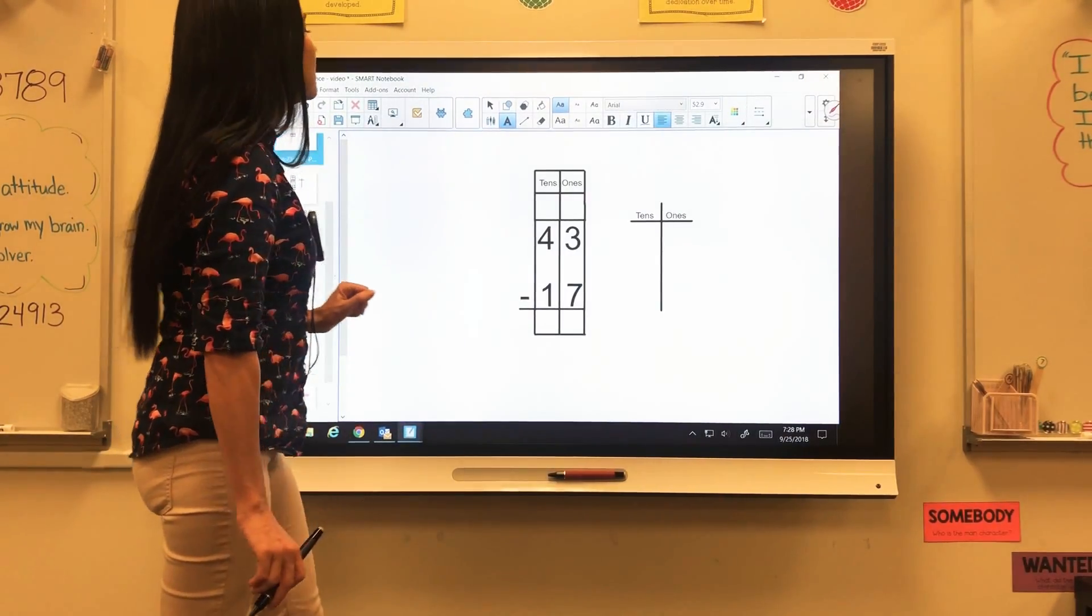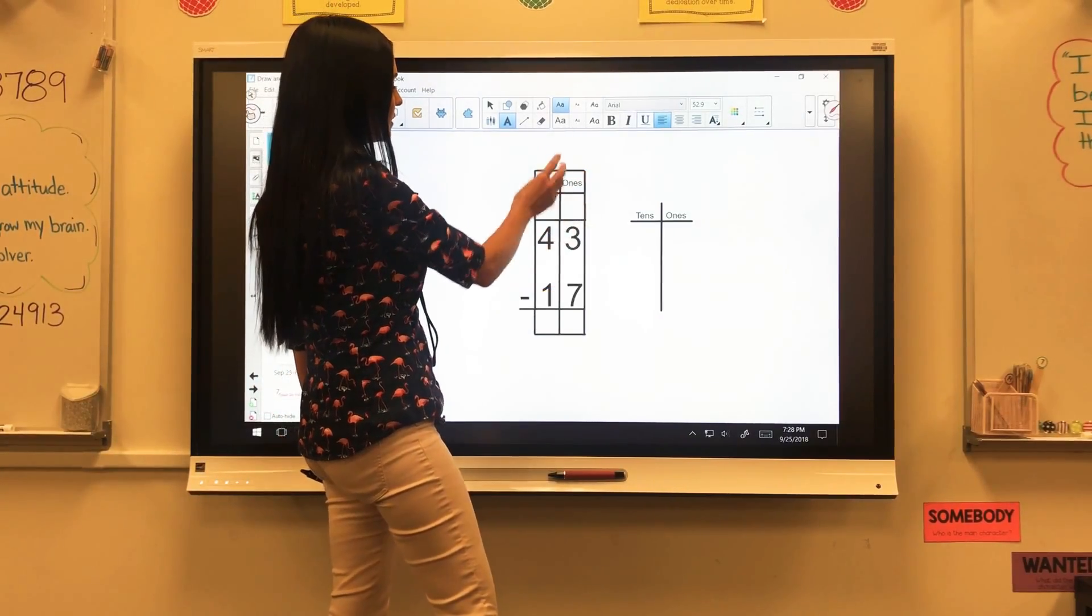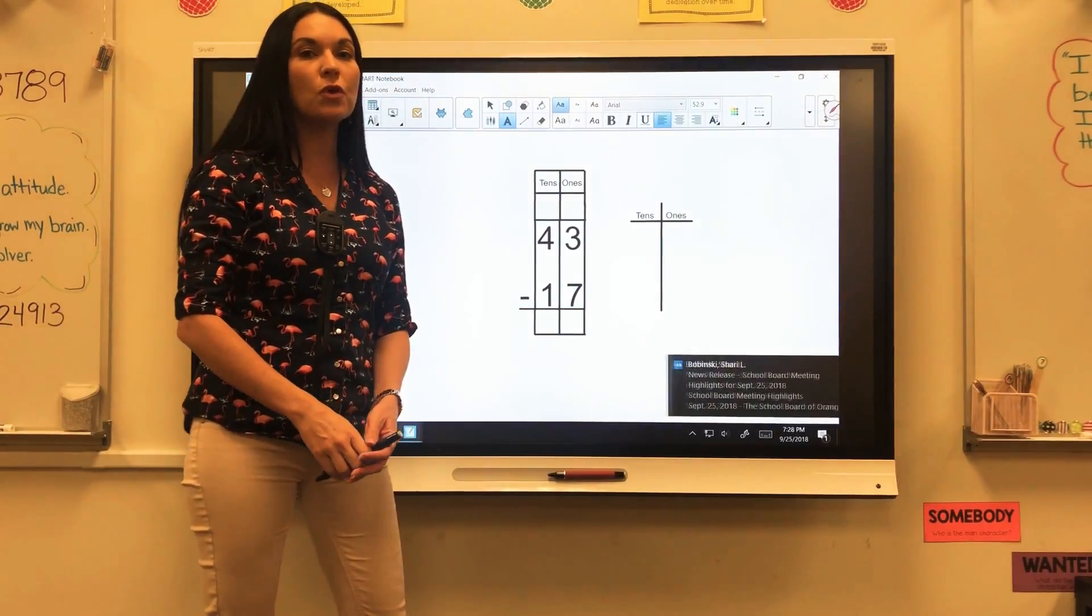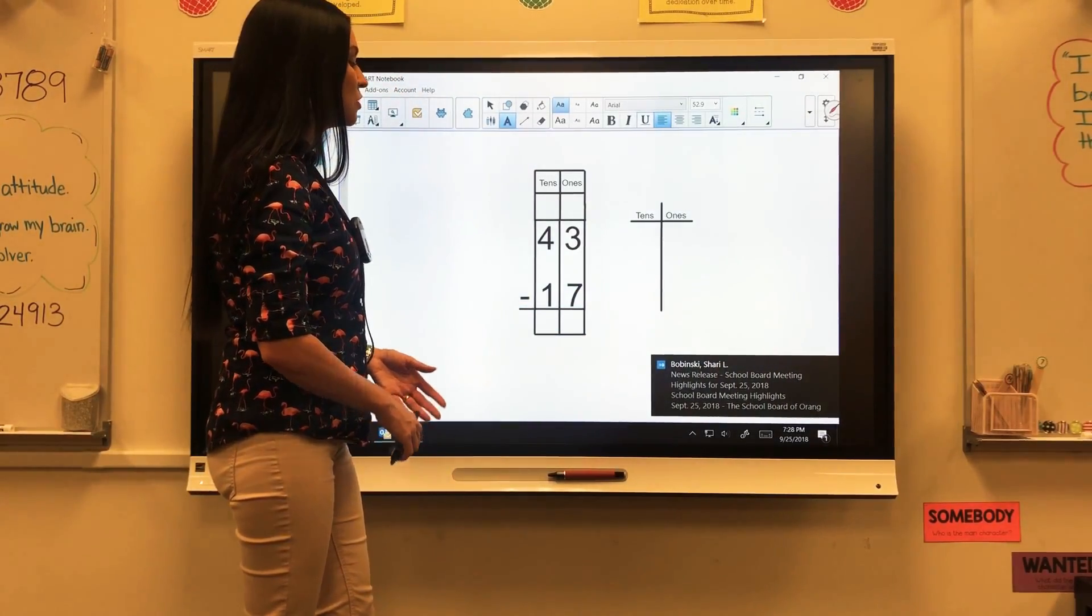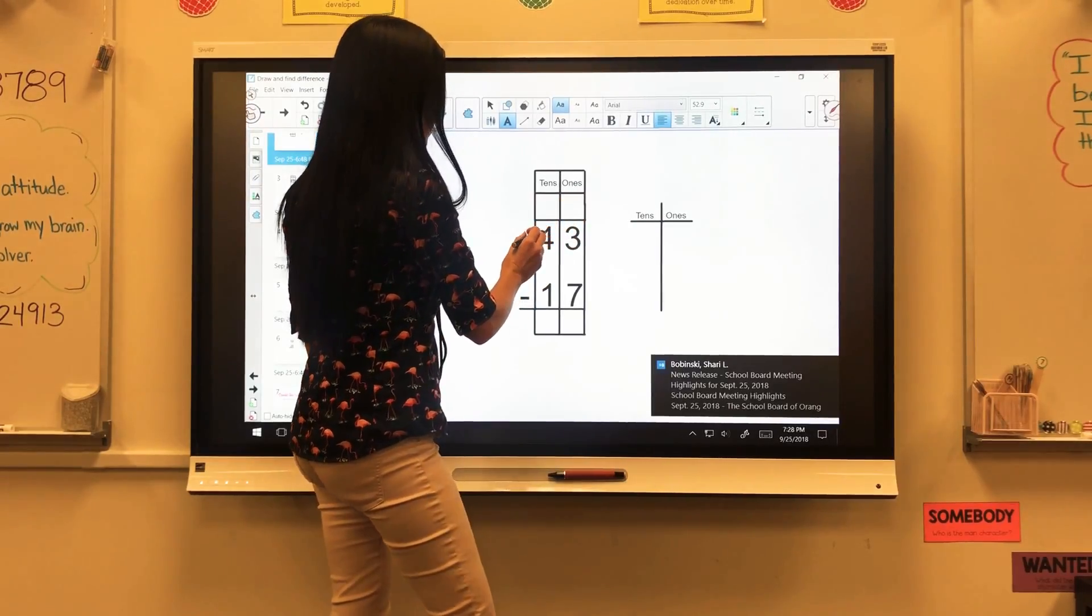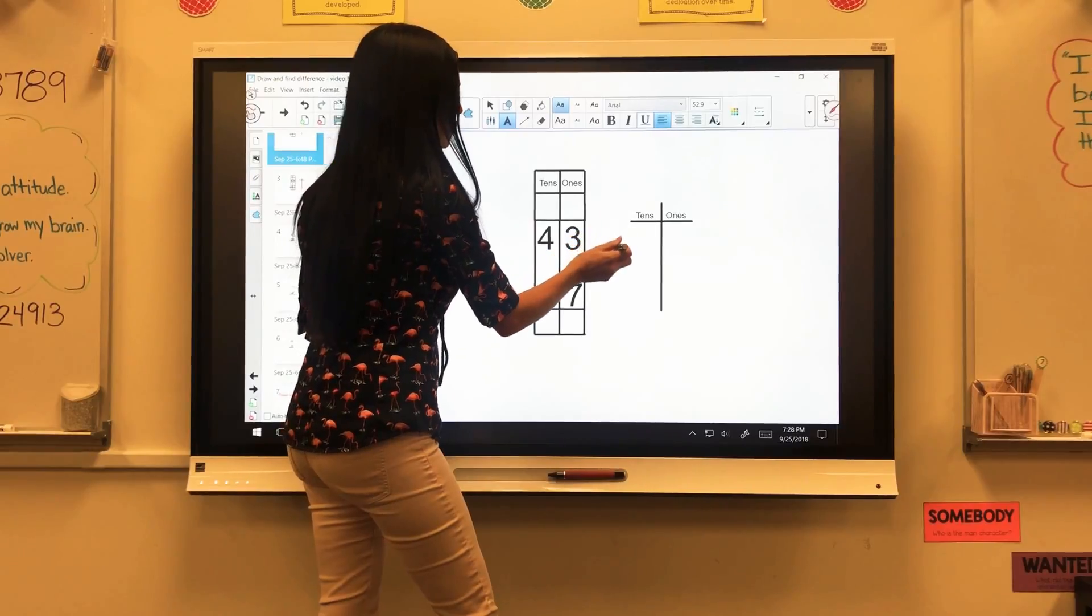Let's get started. So this is 5.4 and in 5.4 it's going to break it down for us where we can see our ones, we can see our tens and it's labeled and then over here is our area where we're going to draw. The directions tell us that we need to draw what's happening. So if I'm going to look at this, I have 43 minus 17. The first thing I need to do is draw my 43.